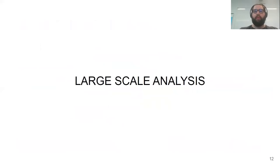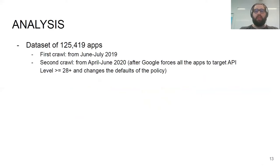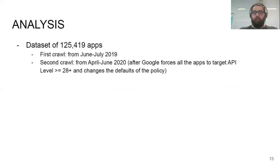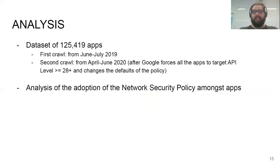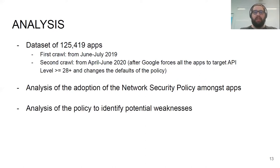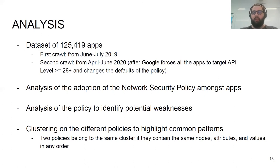As a second contribution of this paper, we wanted to understand and analyze how network security policies are used across Android applications. We performed a large-scale analysis on 925,000 applications downloaded from the Google Play Store. We performed the first crawl from June to July 2019, and then repeated it one year later, from April to June 2020, just after Google forced all applications to target at least API level 28. This dataset was then used to analyze the adoption of network security policy among standard apps and to identify if the policy weaknesses we studied are actually present in real-world applications. We also performed clustering on different policies to highlight common patterns.